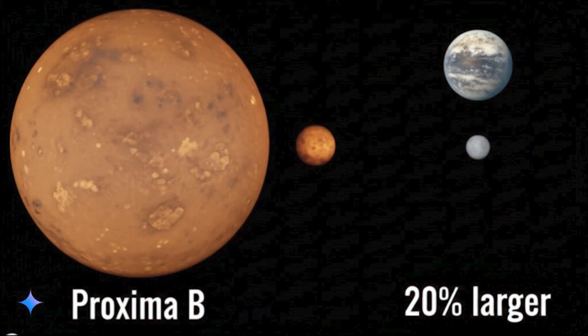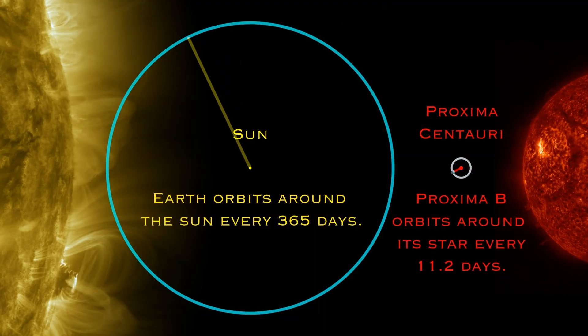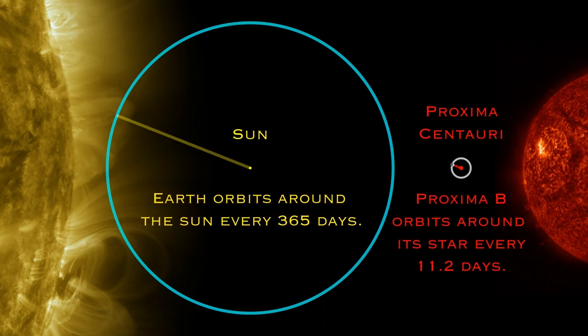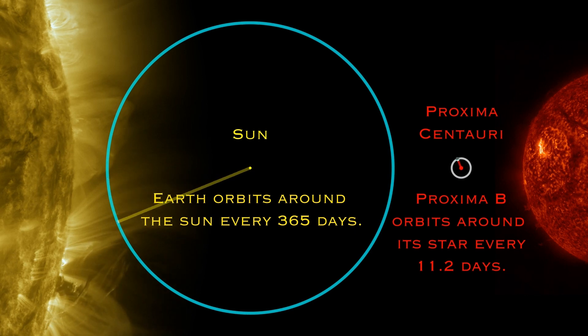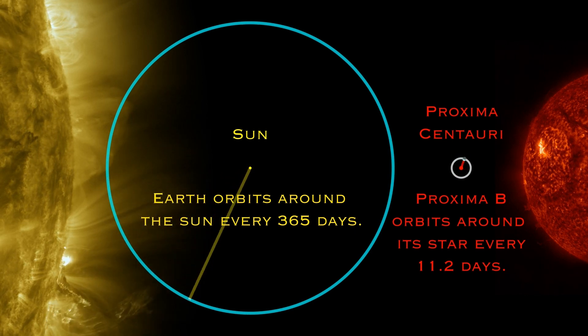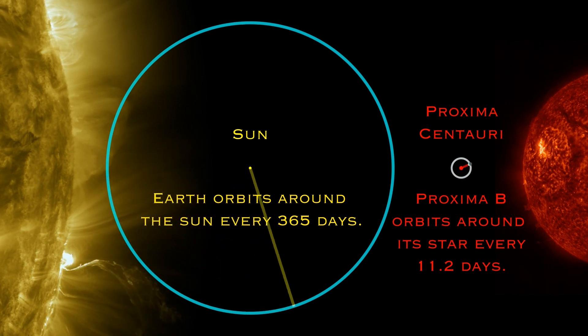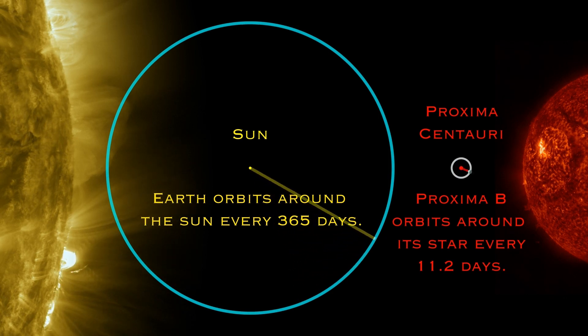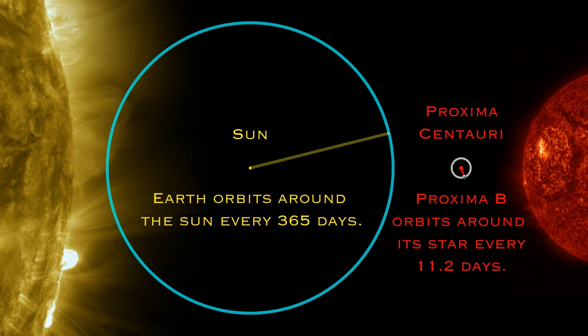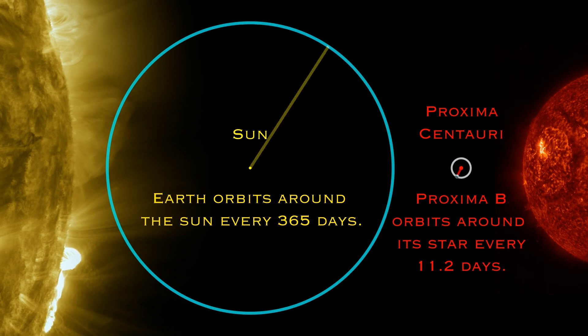Measuring roughly 20% larger than our home planet, Proxima b races around its star in a blistering 11-day orbit. The planet is tidally locked to Proxima Centauri, creating a world of extreme contrasts. One hemisphere experiences perpetual scorching daylight, while the other remains in eternal freezing darkness.